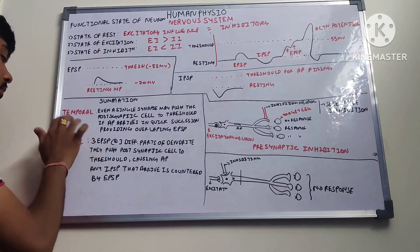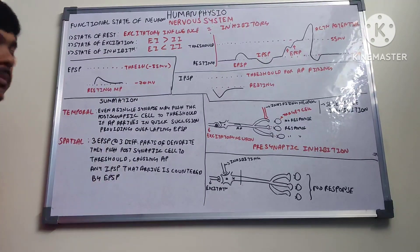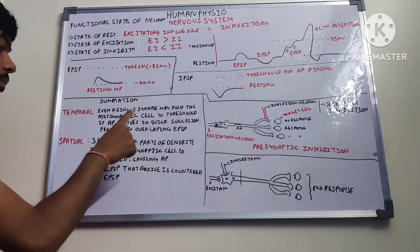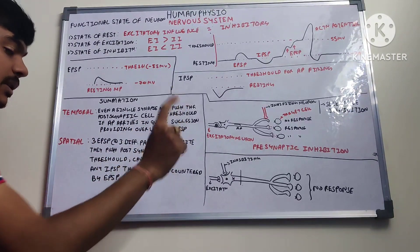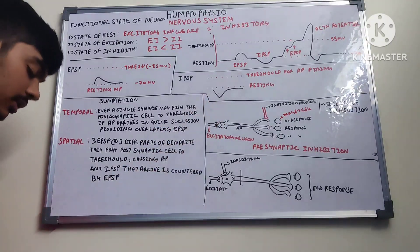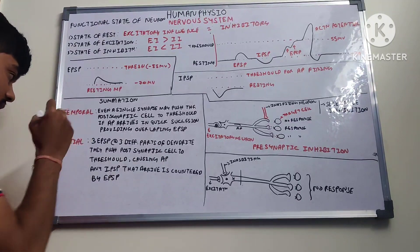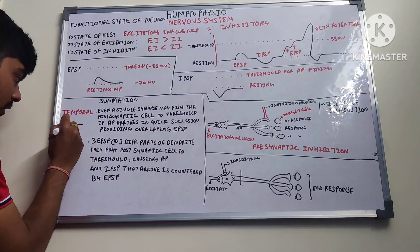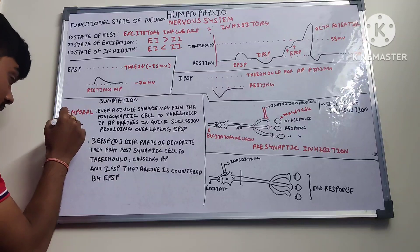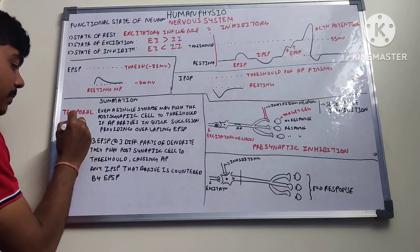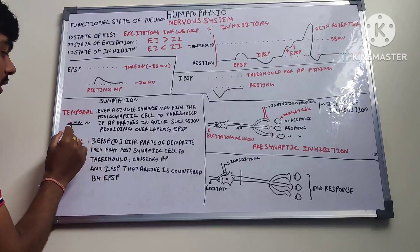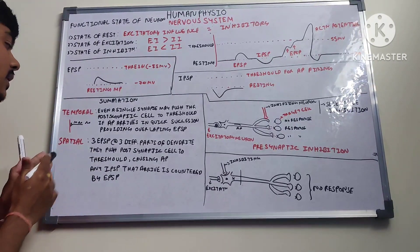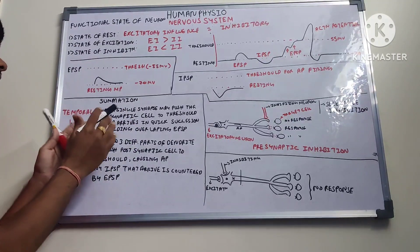There are two types of summation. Temporal summation: even a single synapse may push the post-synaptic cell to threshold if action potentials arrive in quick succession, providing overlapping EPSPs. So if EPSP, EPSP, EPSP, EPSP occurs at one synapse in rapid succession, it can cause an action potential firing.